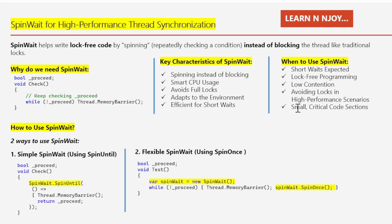Finally, another scenario is small critical sections. When the code you're trying to access is very small — like updating a single variable or performing a quick calculation — SpinWait can avoid the overhead of traditional locks, which are more suited for larger, complex operations. Let's switch to Visual Studio and see how to implement SpinWait for both approaches: simple SpinWait and flexible SpinWait.